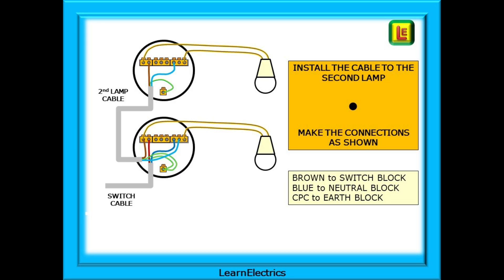Now we can install the cable from ceiling rose number one to ceiling rose number two, the second lamp. The new connections are the same at both ceiling roses. The brown into the two-hole switch block on both ceiling roses. Then on both we connect the blue into the outside block of three holes, the neutral block, and not forgetting the CPC into the earth terminal at both ceiling roses. And that is the job done.